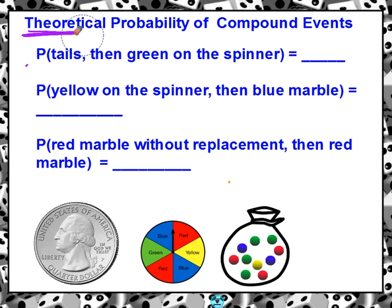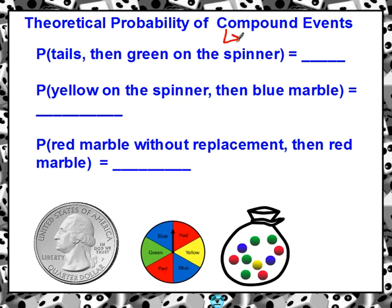Compound events basically just means that more than one thing is happening. Compound events is more than one thing. So you'll notice in just a second, more than one thing is happening.